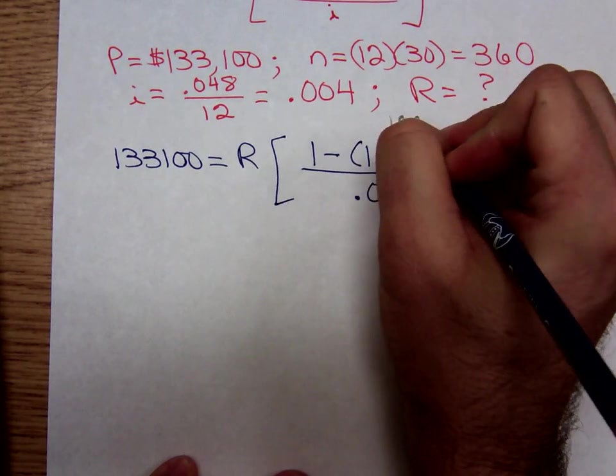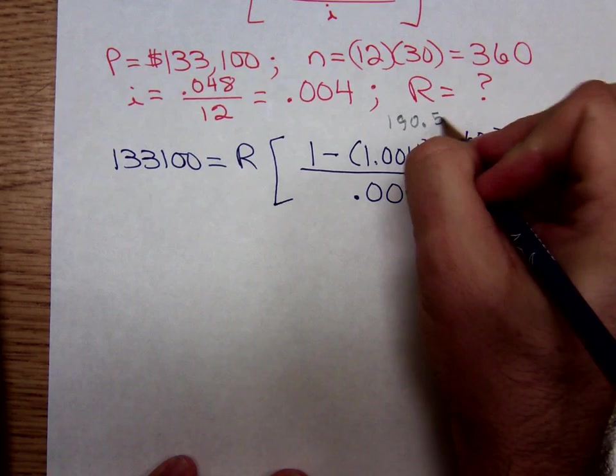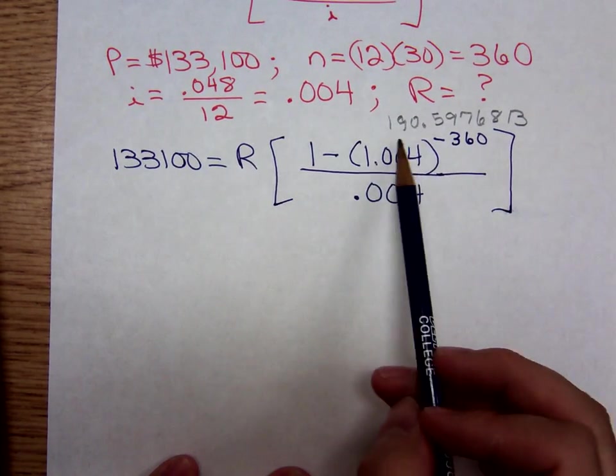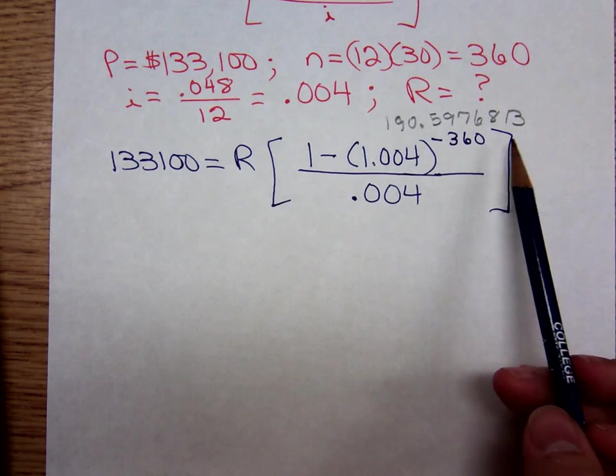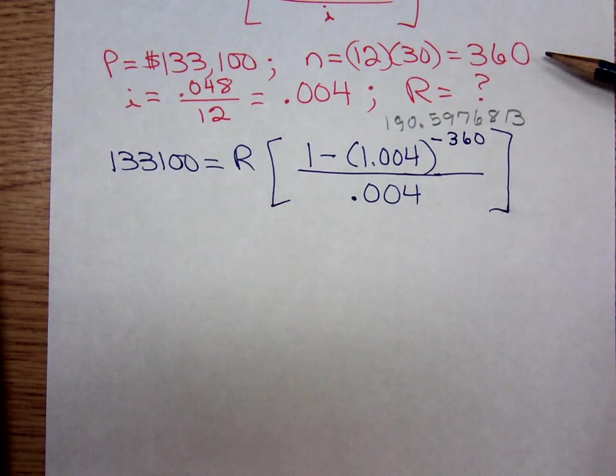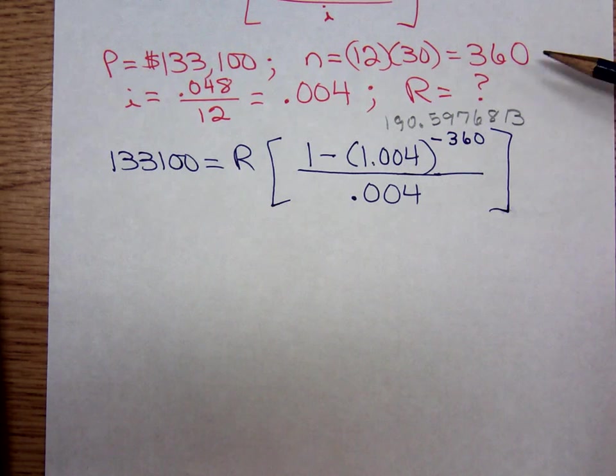190.3976813. And I'm writing that down because that's significant in the real world. It has a very significant meaning to it. They're making 360 payments to pay back this annuity, but in reality it only took about 190 and a half of those payments to pay the entire loan balance back.